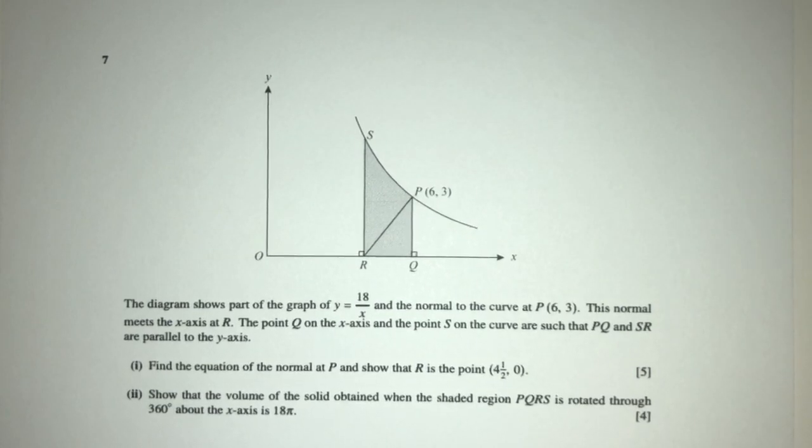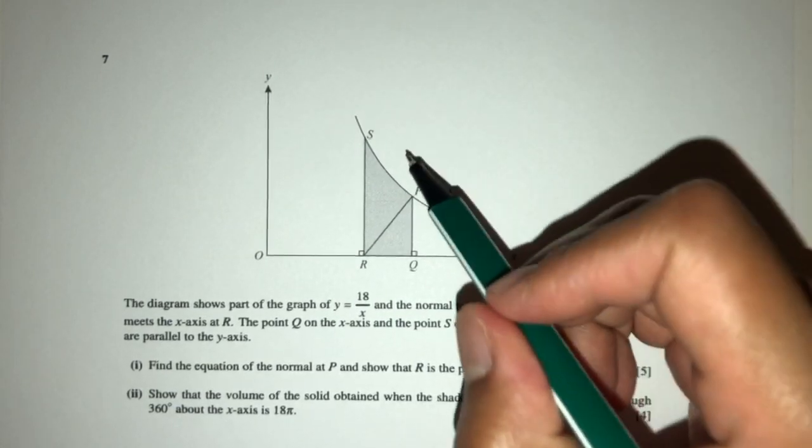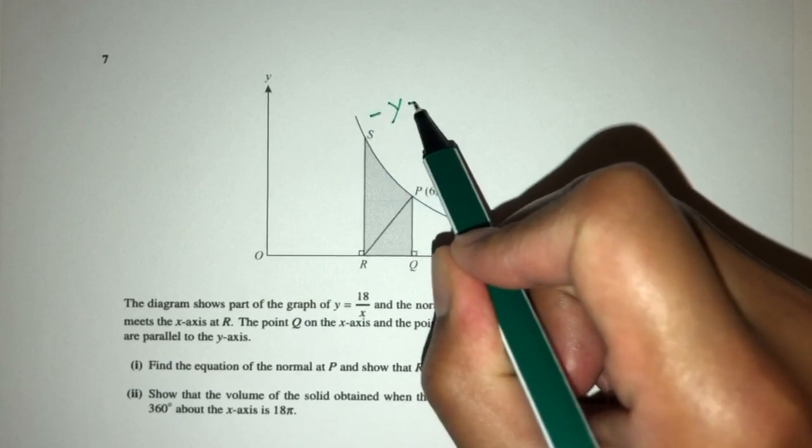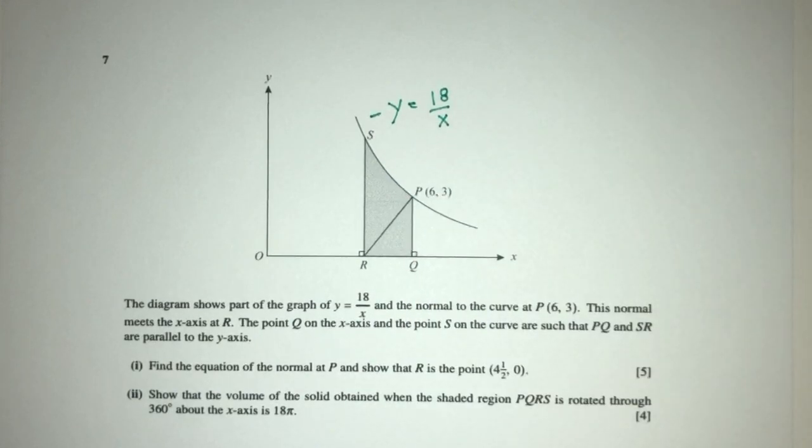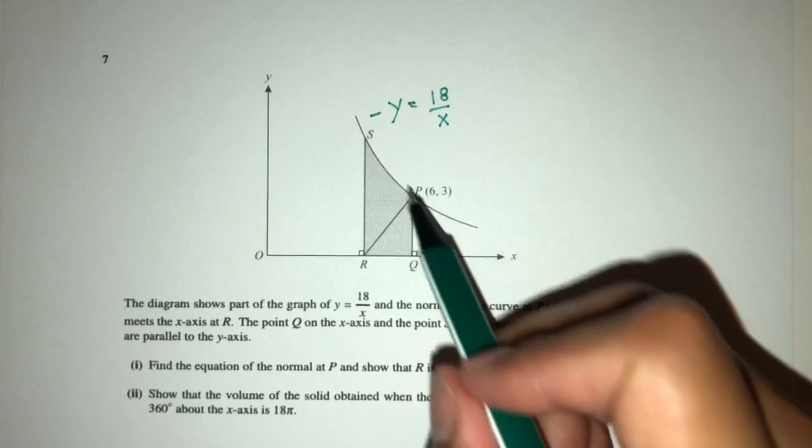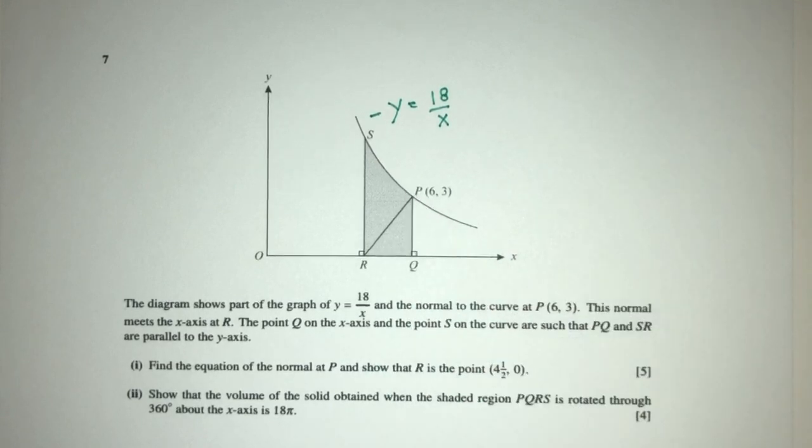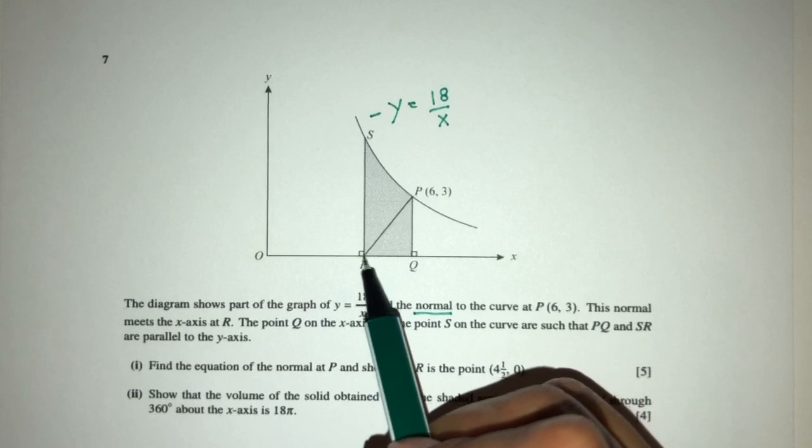The diagram shows part of the graph y equals 18 over x. So let's label this as y equals 18 over x, and the normal to the curve at the point (6, 3). So here we have the point (6, 3), it's the normal to the curve. Now this normal meets the x-axis at R right here.